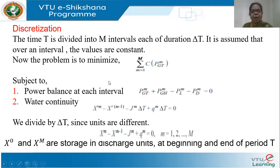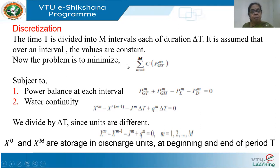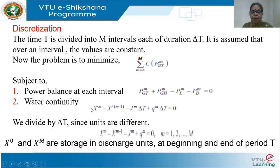With discretization, the problem becomes: minimize the sum of C(PGT^m) for m = 1 to M — replacing integration with summation. Subject to constraints: the power balance equation with superscript m indicating sub-interval m, which must be satisfied at all sub-intervals.